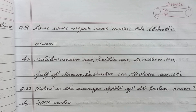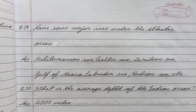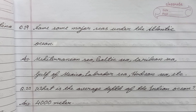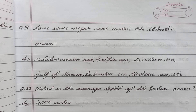Question number twenty: What is the average depth of the Indian Ocean? Answer: 4,000 meters. Dear friends, some more questions are left from this chapter; we will discuss those in our next video. Thank you for watching. For more videos, please like, share, and subscribe to the channel.